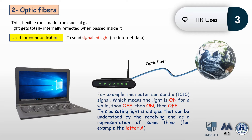The most important application of optic fibers is in communication — sending signaled light such as internet data. A router sends a binary code, for example 1-0-1-0, where 1 means the light is on and 0 means off. The receiving end interprets this pulsating signal: for example, 1-0-1-0 could represent the letter A, and 1-0-0-1 the letter B. This is how data is transferred in bits.